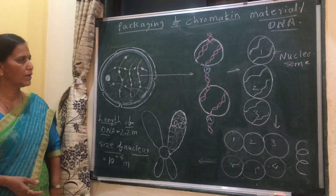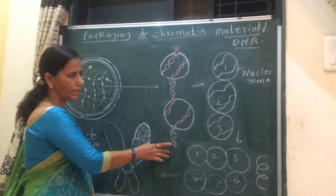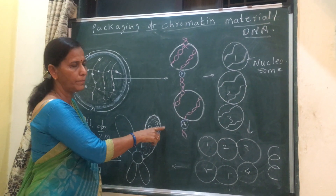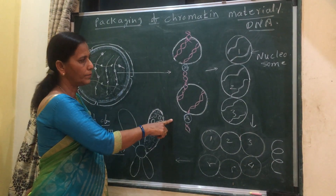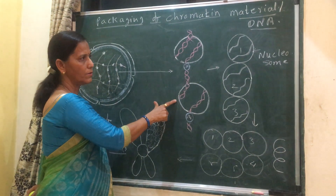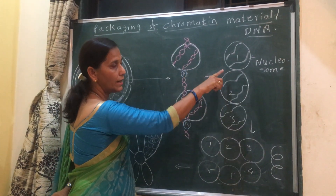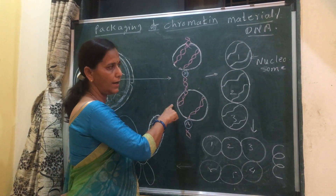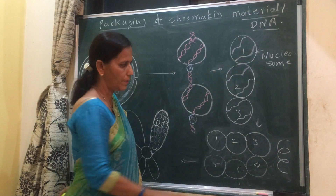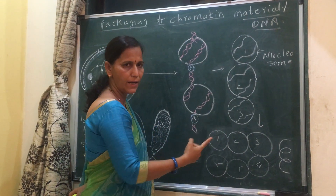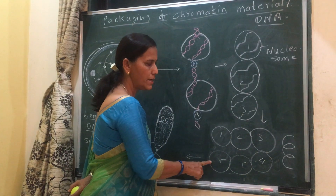How does packaging occur? First, this chromatin thread consists of nucleosomes. Please see my previous video where I explained the structure of this chromatin thread. Then these nucleosomes come together. In this thread, the linker DNA is absent — meaning this DNA gets highly coiled. As a result, the linker DNA is absent. This is the nucleosome fiber, and again it gets coiled like a telephone coil.